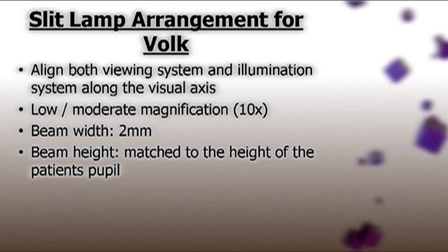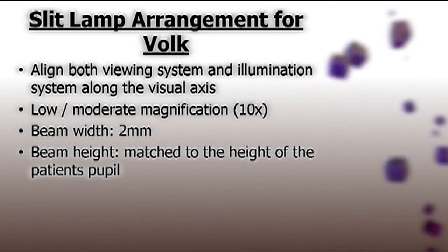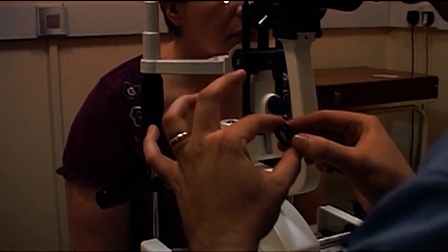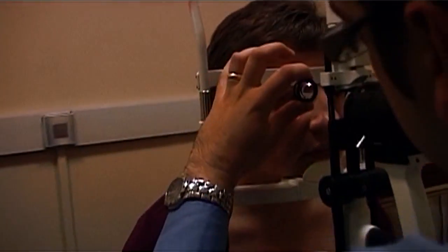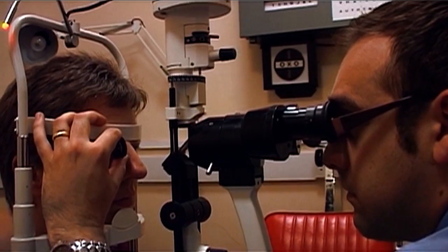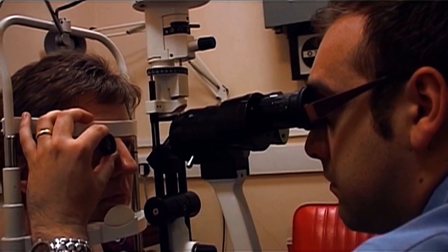We would have the room illumination dim and have the patient looking straight past you. We tend to hold the vault lens between the thumb and first finger, with the V of the vault lens pointing towards the patient — held in the examiner's right hand when examining the left eye, and in their left hand when examining the patient's right eye.